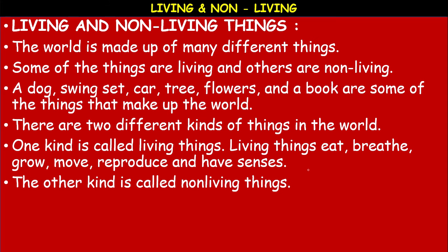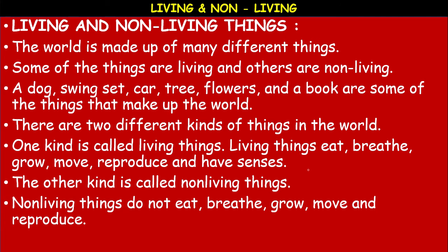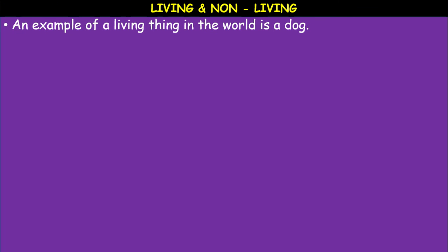Non-living things do not eat, breathe, grow, move, and they cannot reproduce. They do not have any senses, so there is no response to stimulus shown by non-living things. Living and non-living things are quite opposite. However, some organisms may be living at one time and not living later — for example, if you cut a tree, while it is alive it is living, but once cut off, it shows non-living characteristics.